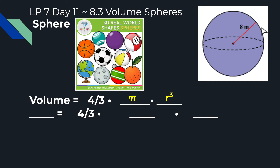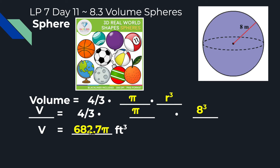Volume is how much three-dimensional space something takes up, which is different from area or length. Now let's calculate the volume of our sphere. We have V equals four-thirds times pi times eight cubed, because eight is our radius in this example. We're going to work through the calculation — let me grab my calculator real quick to show you.